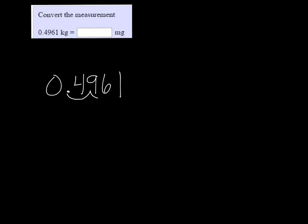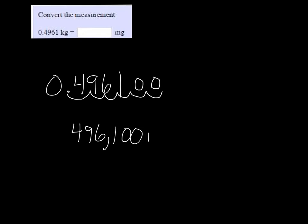From kilograms to grams, I do three hops to the right. That puts me right here between six and one. Now to get from grams to milligrams, I need to do three more to the right, so I need to add two zeros here. Altogether it was six hops, and it's 496,100 milligrams.